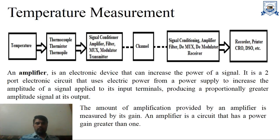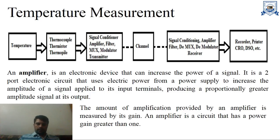Here is some information about signal conditioners. First is the amplifier. An amplifier is an electronic device that can increase the power of a signal. It is a two-port electronic circuit that uses electric power from a power supply to increase the amplitude of a signal applied to its input terminals, producing a proportionally greater amplitude signal at its output. The amount of amplification provided by an amplifier is measured by its gain, and gain is output divided by input, or output power divided by input power. An amplifier is a circuit that has a power gain greater than 1, always.